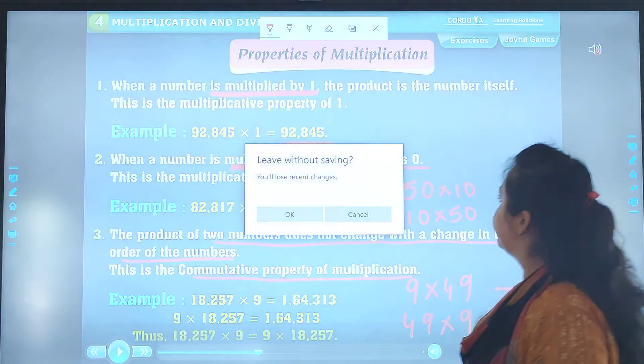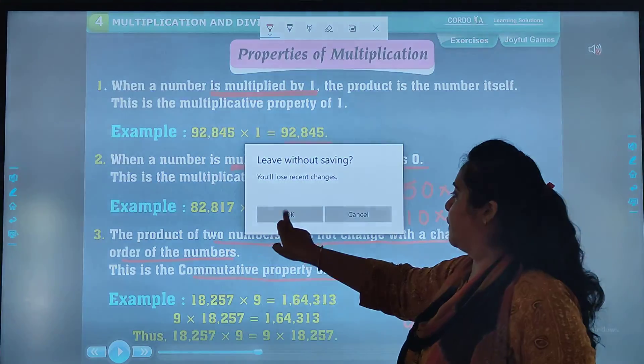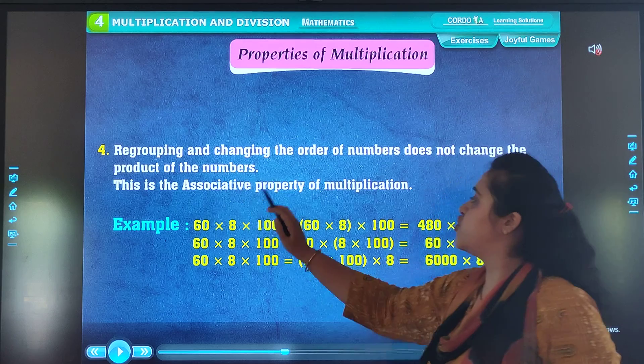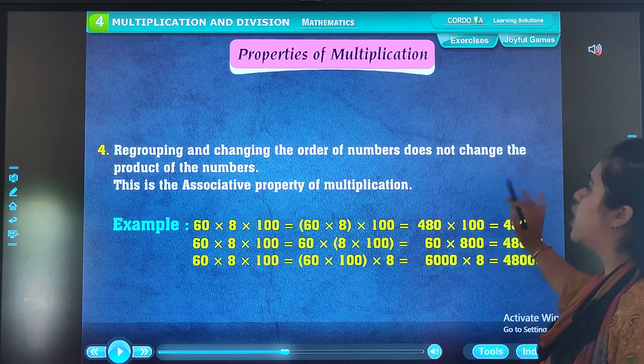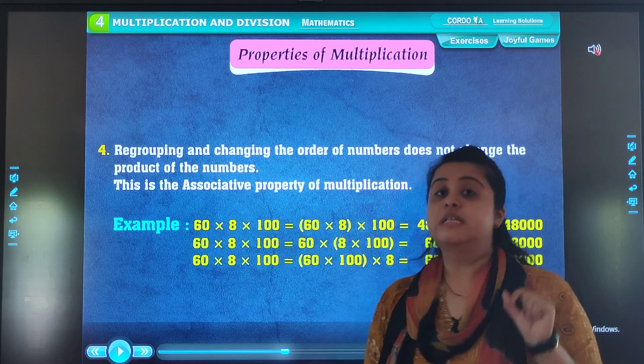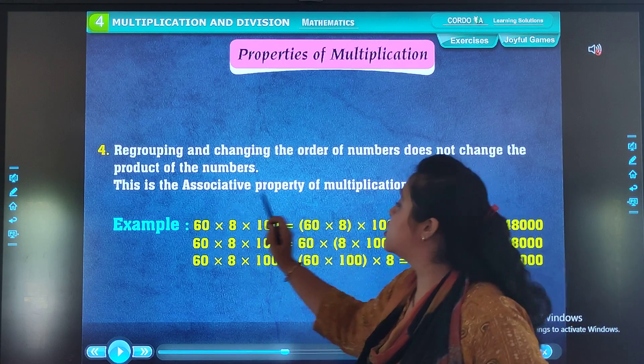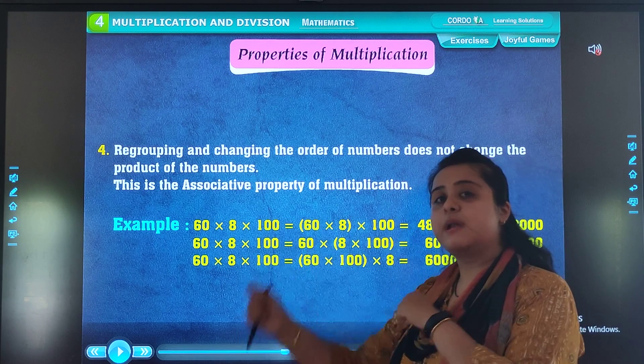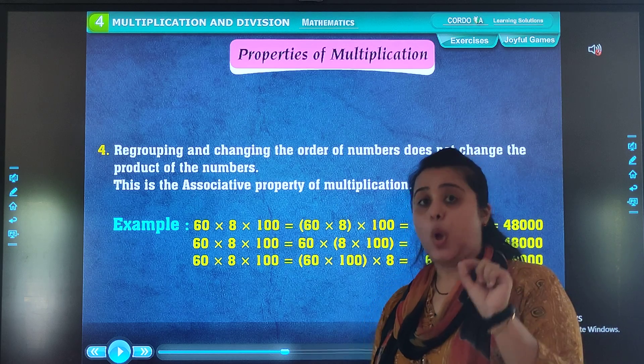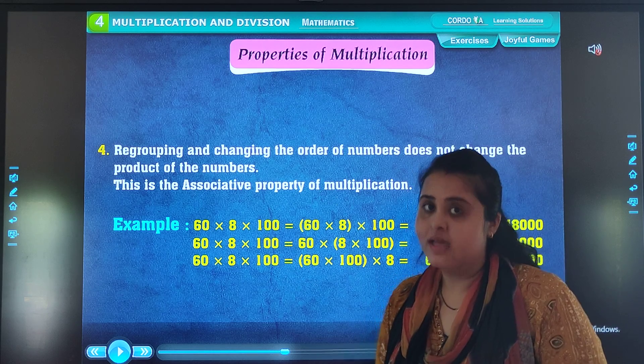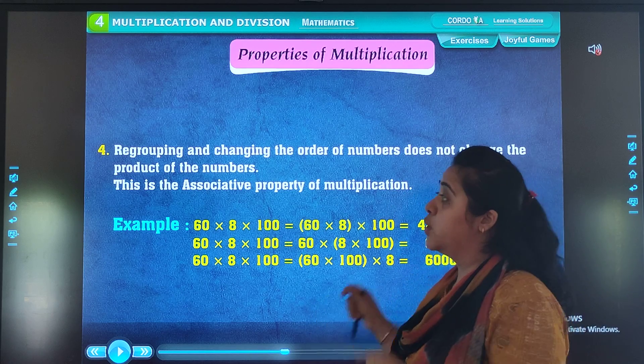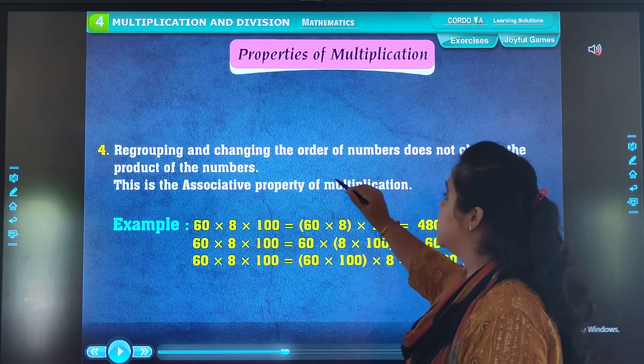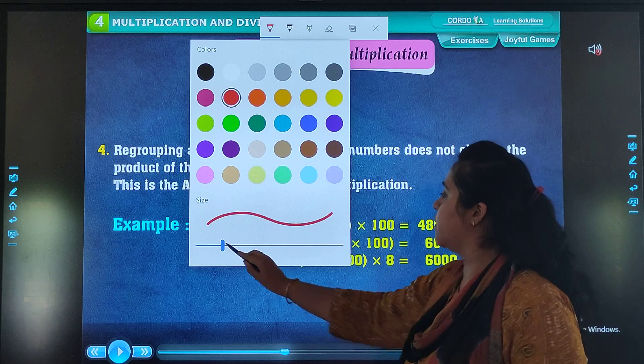So the fourth property will be, changing the order and regrouping the numbers does not change the product of the numbers. So this is associative property of multiplication. For property three, you had two numbers for order change. So your answer did not change. That was commutative property. But when it comes to regrouping, that was associative property. As you can see, examples are here.